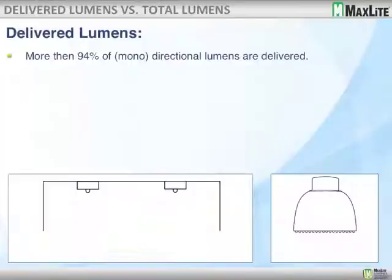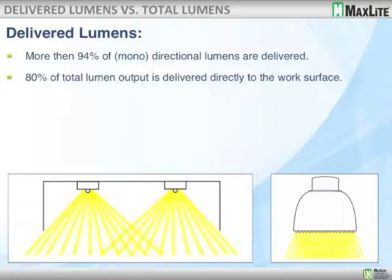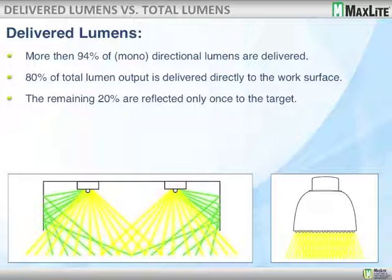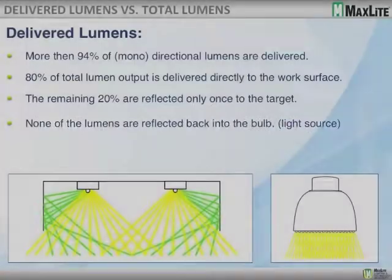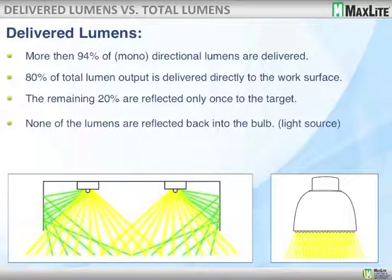When we think of delivered lumens, we think of LEDs — they are directional, and more than 94% of directional lumens are delivered. Why waste light bouncing it off something? About 80% of the total lumen output is delivered directly to the work surface area. The remaining 20% is reflected, but normally only once, so there's only a limited amount of energy and light loss. None of the lumens are reflected back into the bulb or light source area.